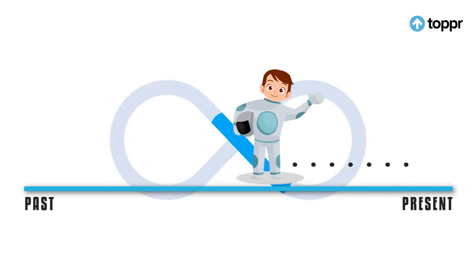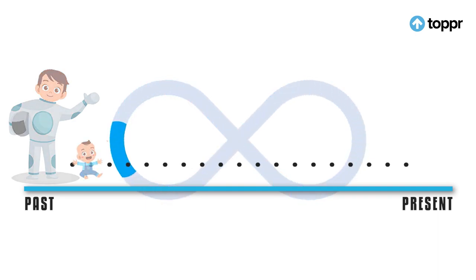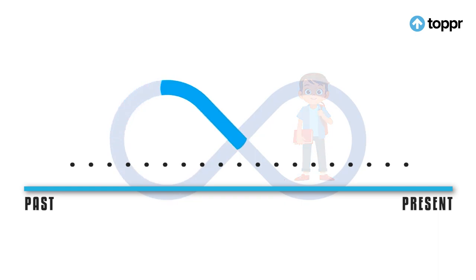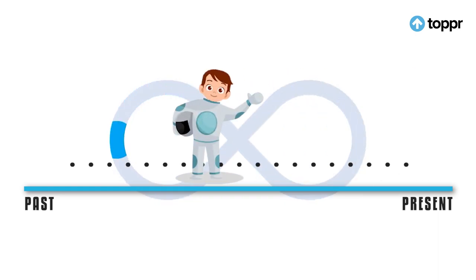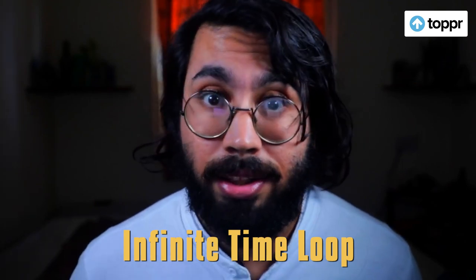Predestination paradox wo loop hota hai jismein ek time traveler past mein jaata hai aur past mein hone wali ghatnaon ki wajah se born hota hai, jiski wajah se wo baar baar past mein jaane ko majboor hota hai aur ek infinite time loop create karta hai.